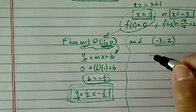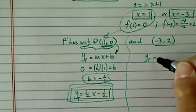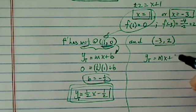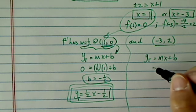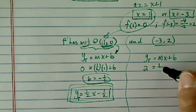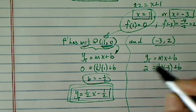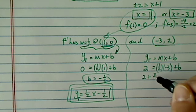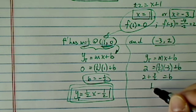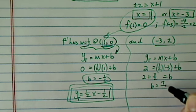Let's take a look at the other one. y of tangent is equal to mx plus b, and here 2 is equal to a half times minus 3 plus b. So it's 2 plus 3 over 2 equal to b, where b is equal to 7 over 2.